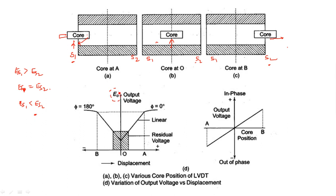Now we take the output voltage at center point O. When the core is at position O (center), equal EMF has been developed in both cases. Moving toward point A or point B changes the output. Even at zero, some residual error exists practically. The phase of A is out of phase with B — one is at zero degrees and the other is at 180 degrees.